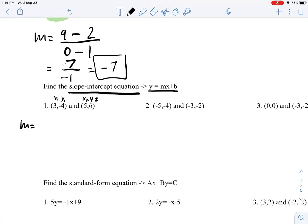y₁ minus y₂, that would be negative 4 minus 6. x₁ minus x₂, 3 minus 5. Then you get negative 10 divided by negative 2, and what you get in total is 5. So we know that our slope is 5.